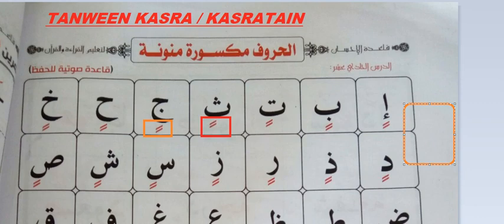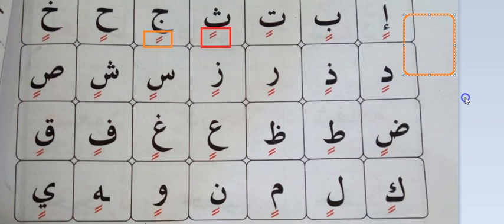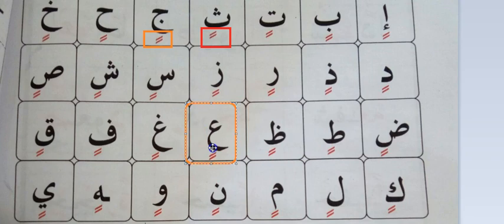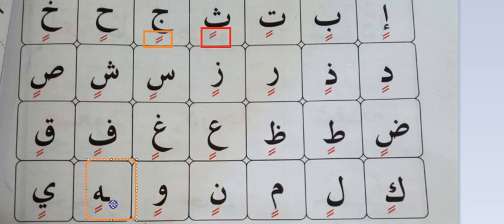I'm going to pronounce the last sounds very clearly — expose it, express it. Bin, kin, vin, an, rin, fin, bin, kin, lin, min, nin, win, hin, yin.